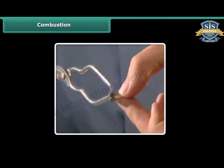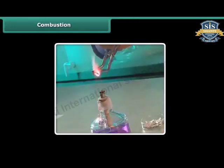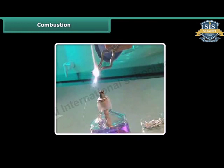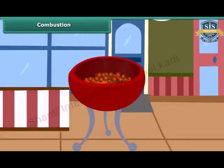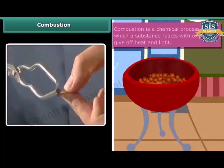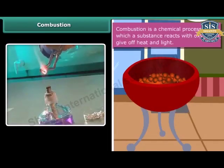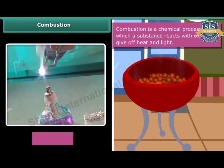Rohan is performing a simple activity. He is burning a magnesium wire on a flame. Notice carefully — heat and light is also produced along with magnesium oxide. Now look at the burning of coal. This burns in air producing carbon dioxide, heat and light. In both examples, the substances are reacting with the oxygen of the air to produce heat and light. This process is called combustion.